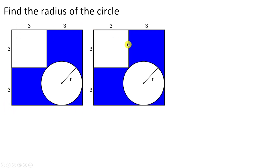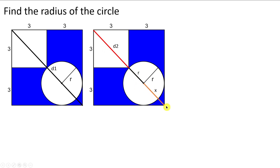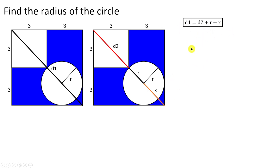Let's double the figure. We can note that the diagonal of the bigger square, d1, is composed of the diagonal of the smaller square d2, plus the radius of the circle, plus a distance x. So we have the relationship: d1 = d2 + r + x. To find the radius, we need to find d1, d2, and x.